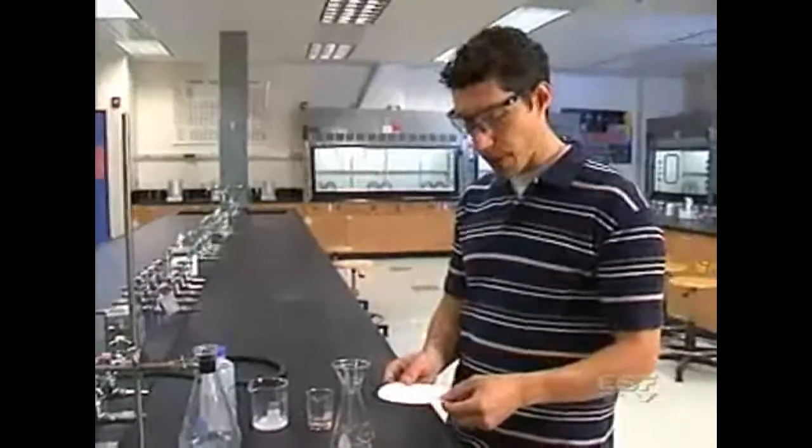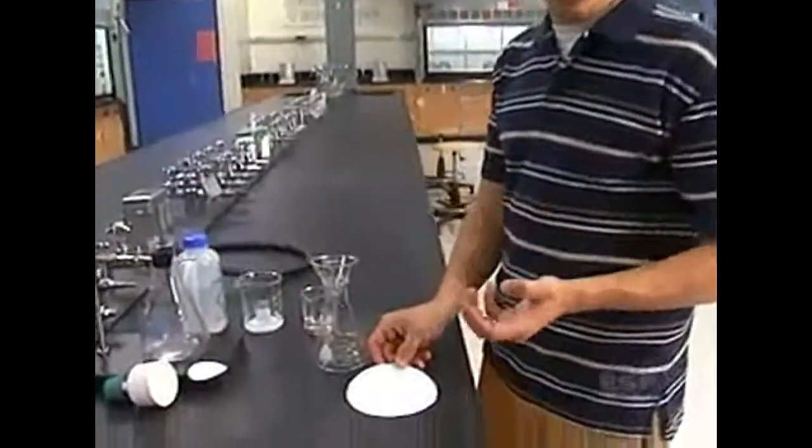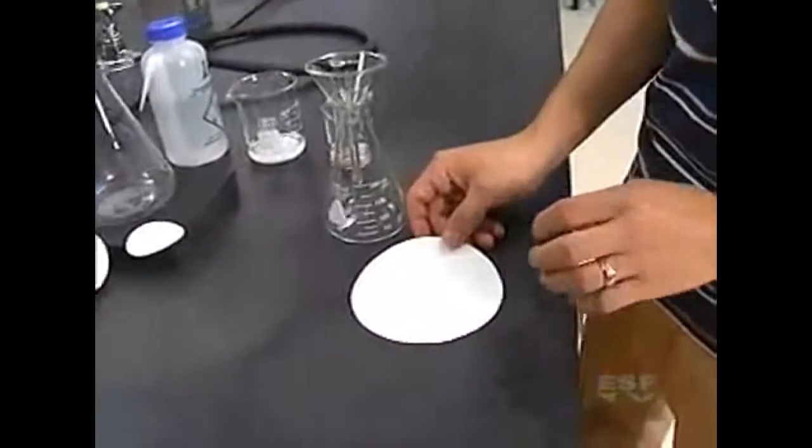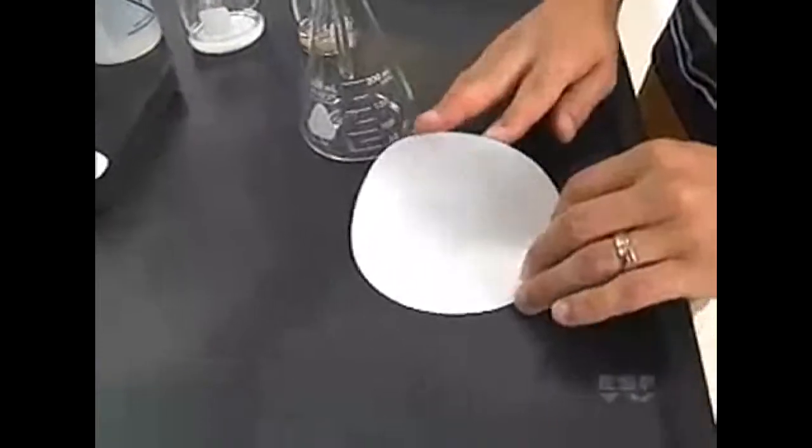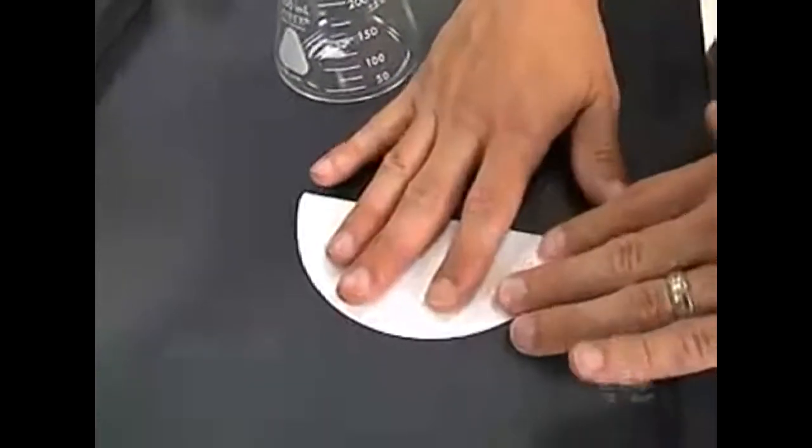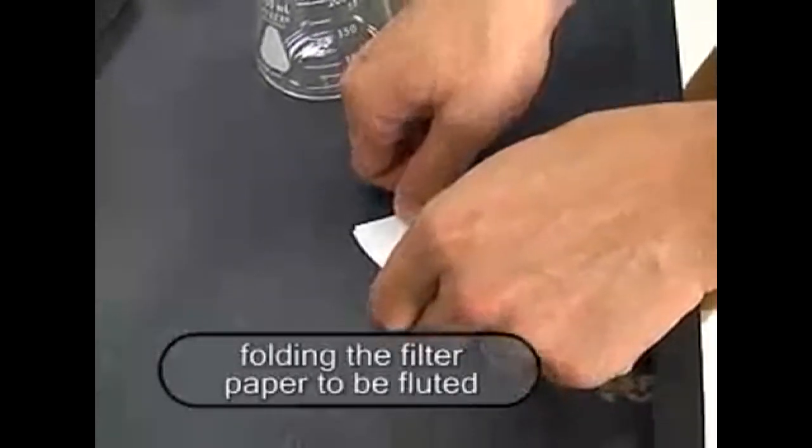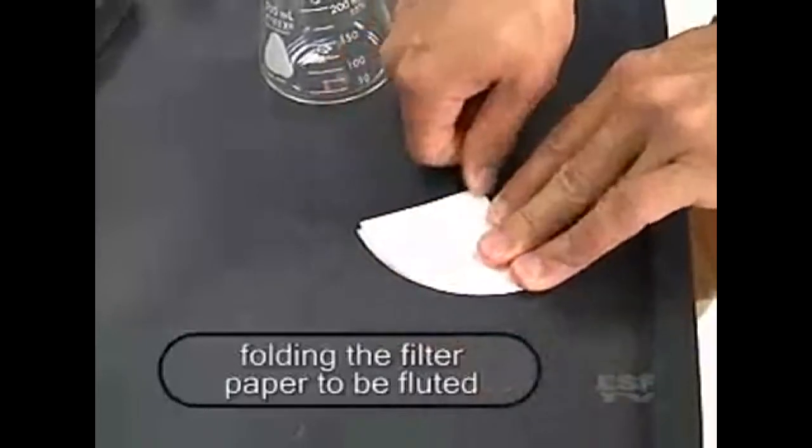What we have to do is fold the filter paper and we're also going to flute it. In the process of fluting, we're going to increase the surface area so the filtration is that much more efficient. So to fold the filter paper, I'm going to first fold it in half into a semicircle and form a crease, and then turn it and fold it one more time into quarters. So now I have a cone.